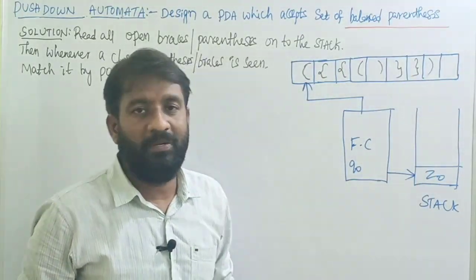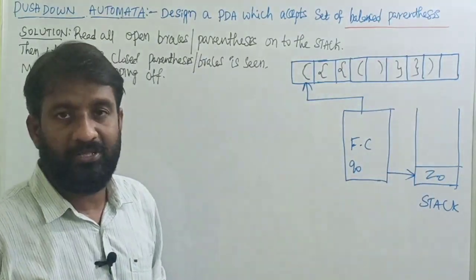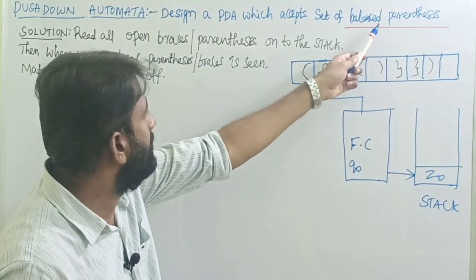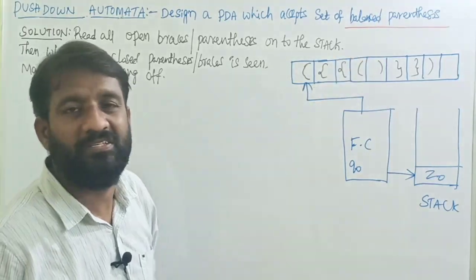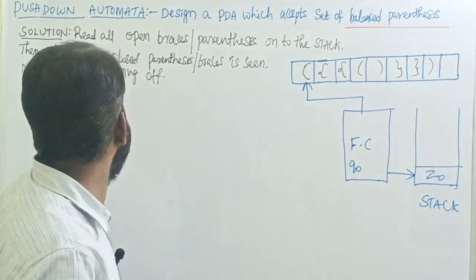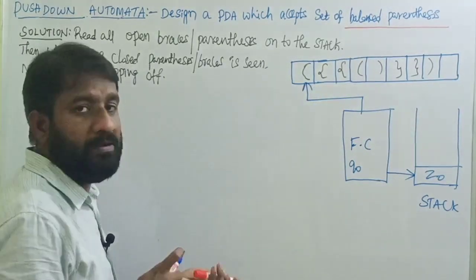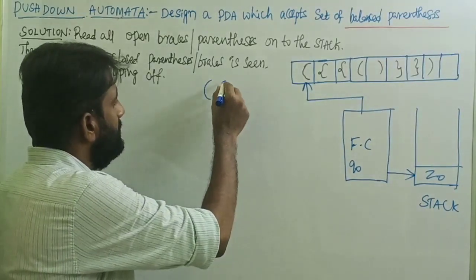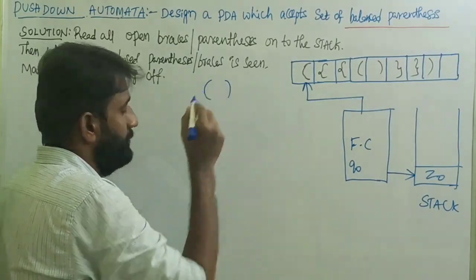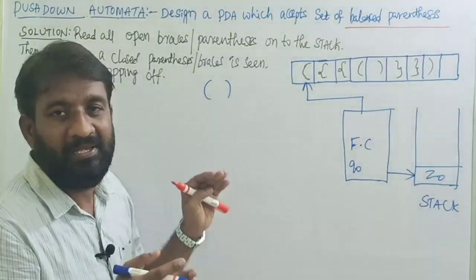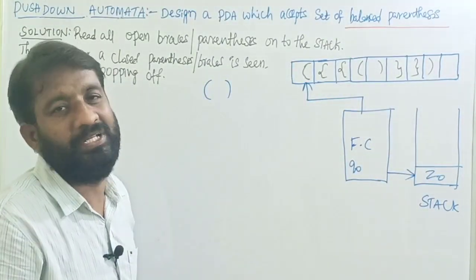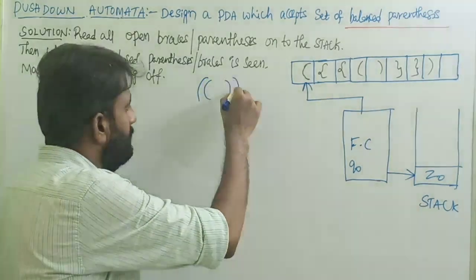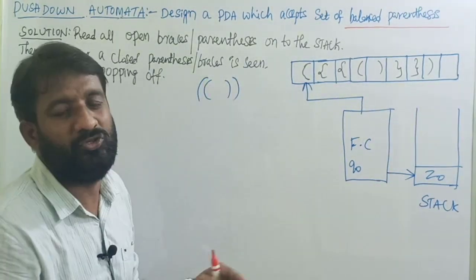Let me tell you what I mean by balanced parentheses, balanced braces — everything we are considering. For example, open brace then close brace — this is balanced braces. If I write one more open brace and one more close brace, this is also balanced braces.